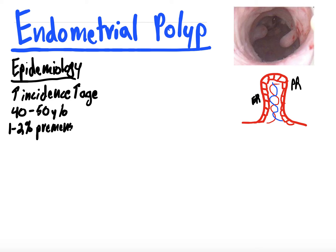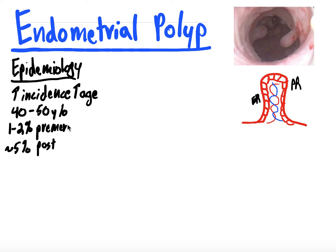But in 1% to 2% of premenopausal women, they can be malignant. So it's important to get them removed and sent to pathology. And then in about 5% of postmenopausal women, they are malignant. So you want to get these removed and send them to pathology to ensure that they're not actually malignant.